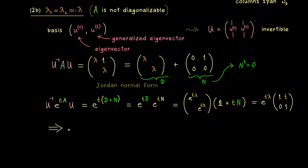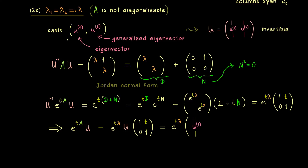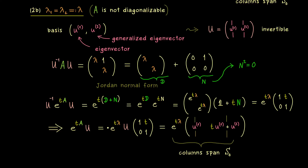As before, we bring the inverse to the right-hand side by multiplying matrix U on the right. The columns are immediately visible: the first column is simply our eigenvector u1, and the second column is t*u1 plus our generalized eigenvector u2. Together, multiplied by e^{t*lambda}, these span the whole two-dimensional solution space. This completes our discussion — we now have the full solution theory for two-dimensional linear homogeneous autonomous systems. If you know the correct properties of matrix A, you can write down the solution space with no further surprises in the two-dimensional case.